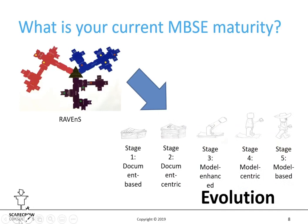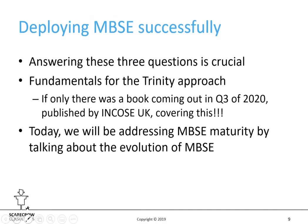The third question is about your current MBSE maturity. We again use Ravens with priority counters on the people, process, and tools aspects to give a good indication of maturity. We plot maturity using what we call our evolution worksheet or evolution scale — and that's what we're going to be talking about today. Answering these three questions is crucial to deploying MBSE successfully.